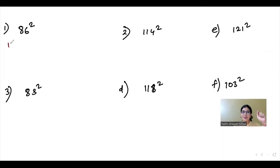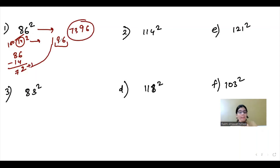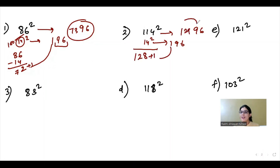For 86: the difference from 100 is 14. Fourteen squared is 196. The last two digits are 96, and 1 is carried forward. Since 86 is less than 100: 86 minus 14 equals 72. Adding the carry gives 73. So 86 squared is 7396. For 114: difference is 14, 14 squared is 196. Since 114 is greater than 100: 114 plus 14 equals 128. Carrying the 1 forward gives 129. So 114 squared is 12996.